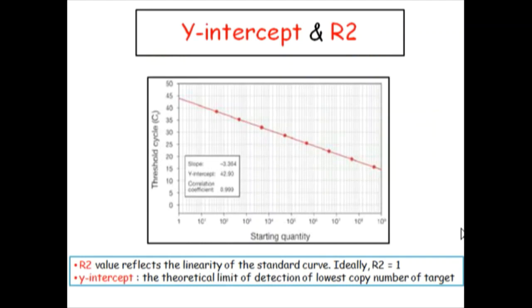Now come to the y-intercept and R-square. Y-intercept is the direct measure of sensitivity of a real-time PCR. That means if the lowest copy number of target molecule is present in a reaction, what could be the Ct value? In this particular picture you can see the y-intercept value is 42.90 - meaning if the lowest copy number of target molecule is present, after the Ct value of 42.90 those molecules will be detected.